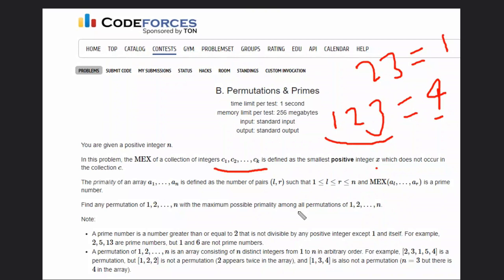This is the thing. Basically what we have to do is determine a permutation which can result into maximum number of primal arrays.